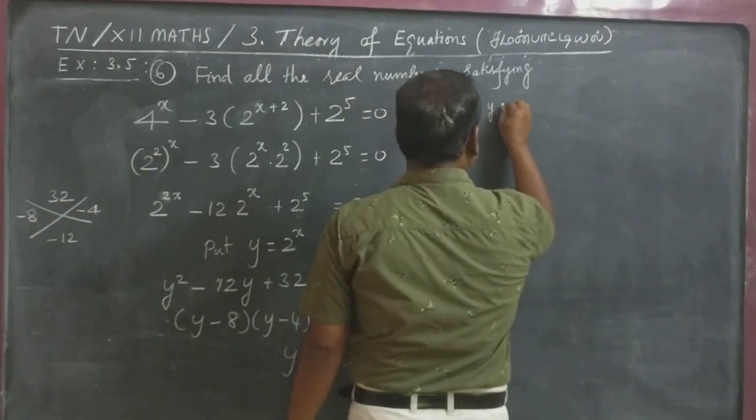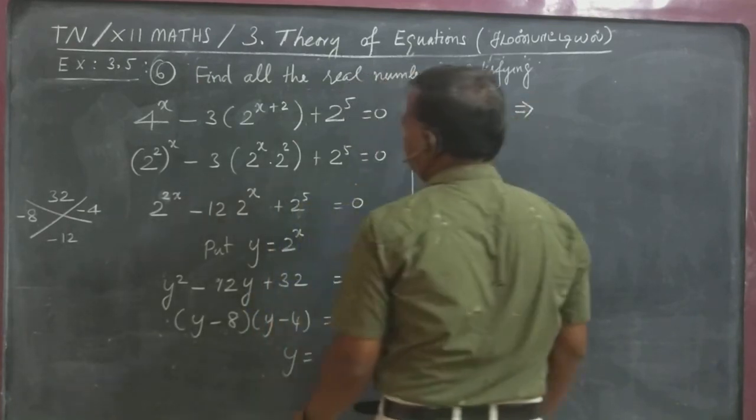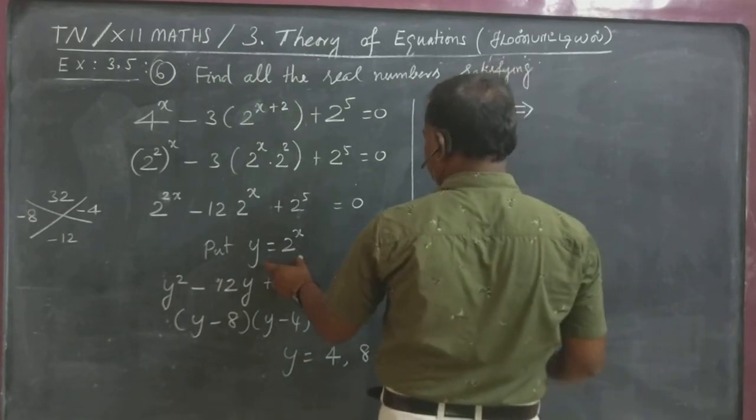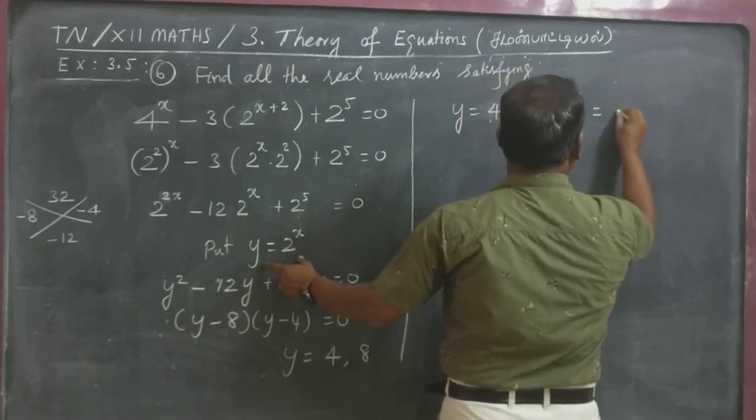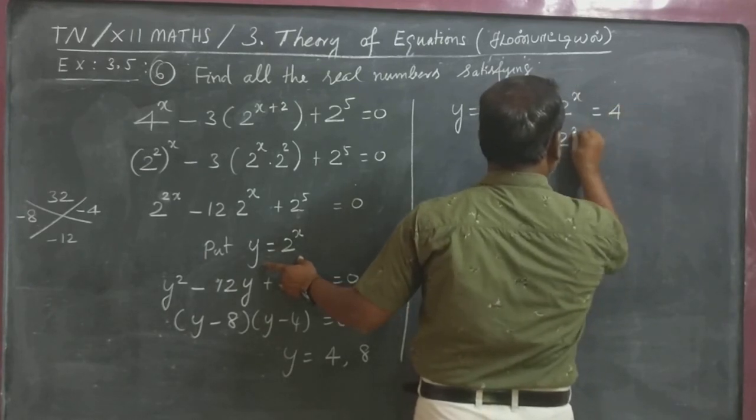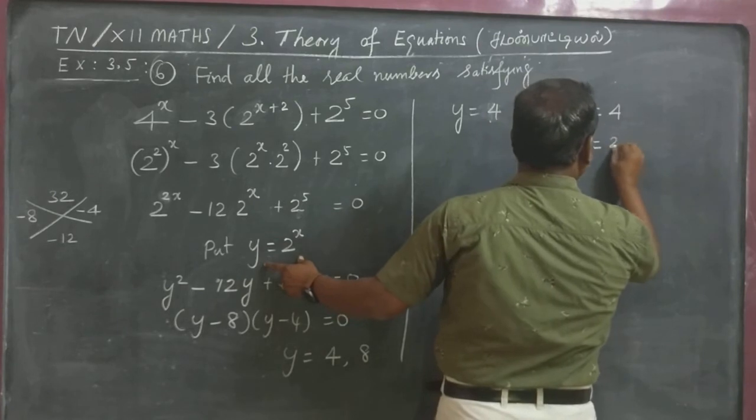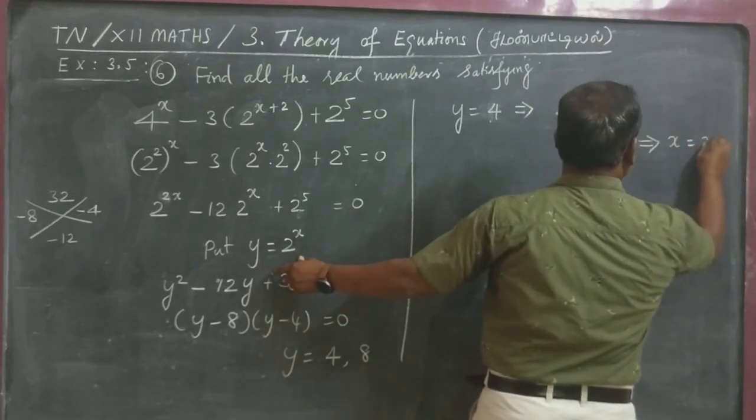Y equal to 4 implies, put here, 2 power X is equal to 4, that is 2 power X is equal to 2 square. So X is equal to 2.